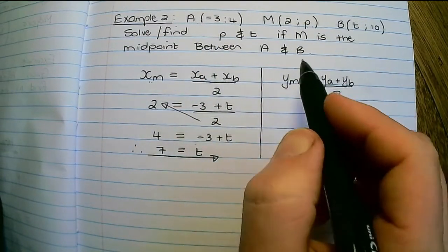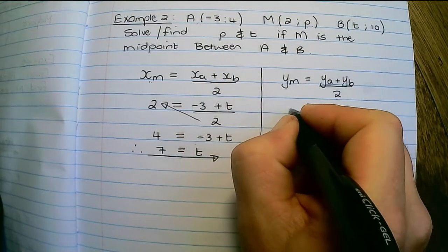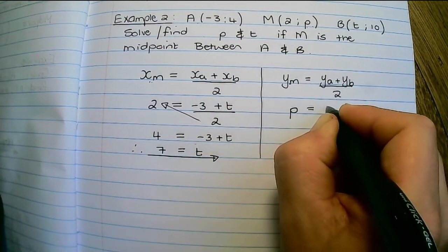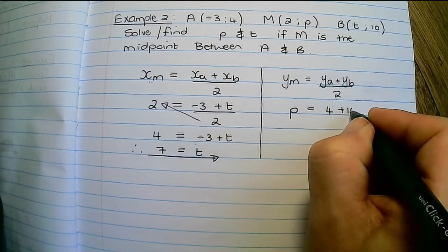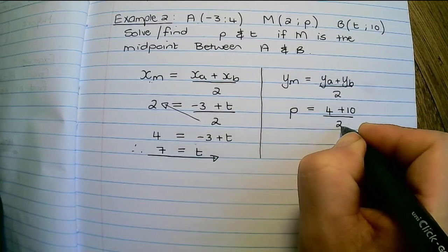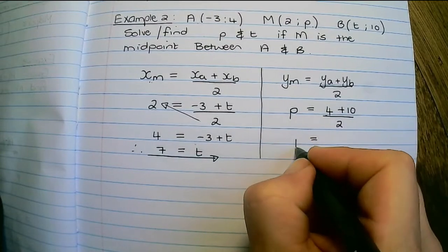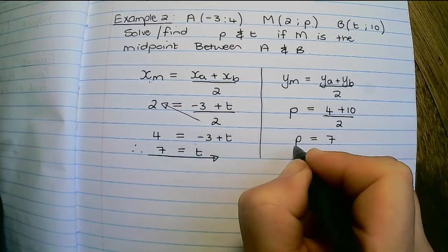So if I substitute, the y of M is equal to P, the y of A is four, the y of B is 10 divided by two. That is 14 divided by two, so P is equal to seven.